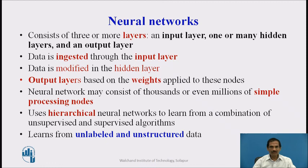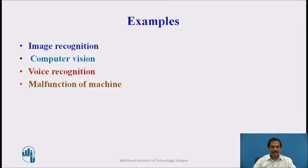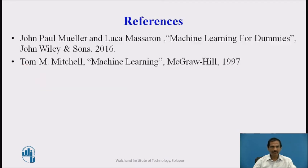Neural networks consist of thousands or even millions of simple processing nodes called neurons. They use a hierarchical neural network to learn from a combination of both supervised and unsupervised learning algorithms. They learn from unlabeled and unstructured data to generate the required results. Examples of neural network learning include image recognition, computer vision, voice recognition, and detection of malfunctioning in a particular machine.